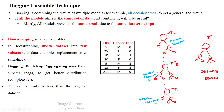Welcome to advanced ensemble technique: bagging. Bagging combines the results of multiple models — mostly decision trees are used as weak learners to get a generalized result. If all the models utilize the same set of data and combine it, it is not useful, because all models provide the same result due to the same dataset being given as input.